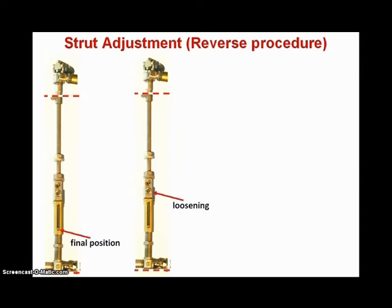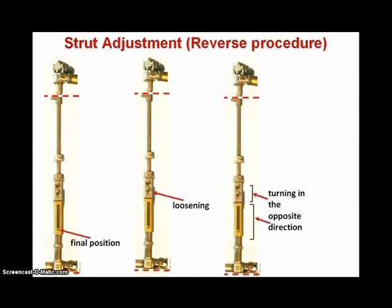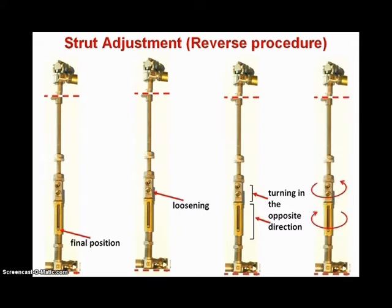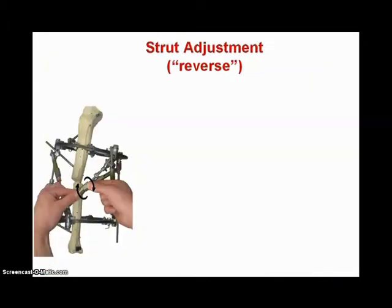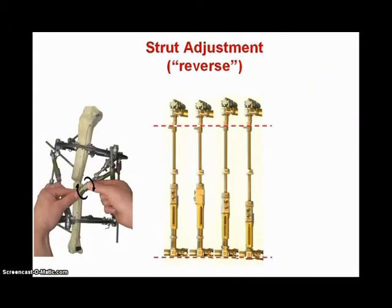You see the indicator of the strut's length. To make the possibility of further lengthening the strut, it is necessary first to loosen the second screw, which is close to the yellow cylinder, and then to turn the gray part of the strut's length changing unit and yellow cylinder in the opposite directions. You see how it is made, and here you see that the strut length remains the same.